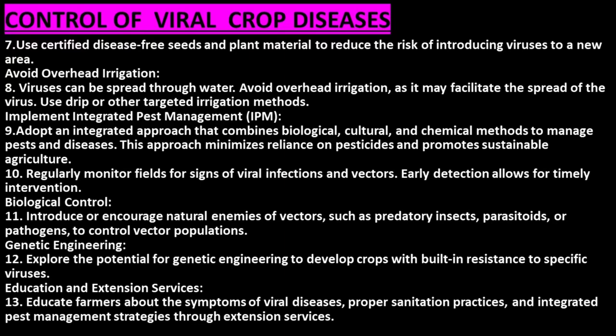Biological control: introduce or encourage natural enemies of vectors, such as predatory insects, parasitoids, or pathogens, to control vector populations. Genetic engineering: explore the potential for genetic engineering to develop crops with built-in resistance to specific viruses. Educate farmers about the symptoms of viral diseases, proper sanitation practices, and integrated pest management strategies through extension services.